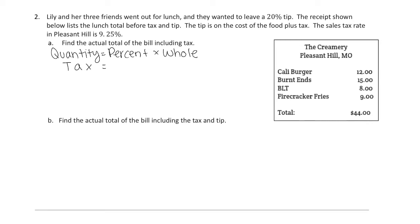The percent we are given is 9.25%. We need to first turn that percent into a decimal by moving the decimal two places to the left, giving us 0.0925. Our whole is going to be the whole cost, which is $44. Now let's go ahead and take our percent times our whole. Go ahead and calculate this in your calculator. The answer you should have gotten is $4.07.